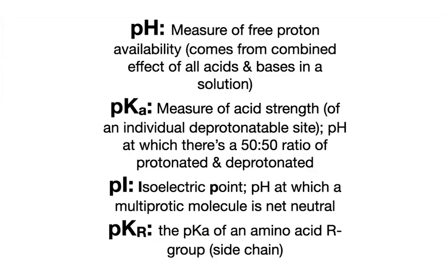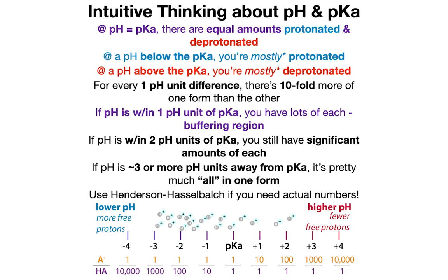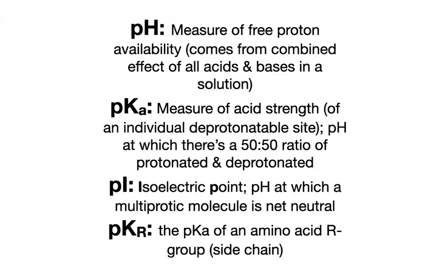To summarize: pI relates to charge, pKa relates to an individual acidic site. pKr is just the name for the pKa of an amino acid's R group — aka side chain. pH is telling you at the solution level, and you compare the pH to the pKa or to the pI in order to figure out what state things are in.